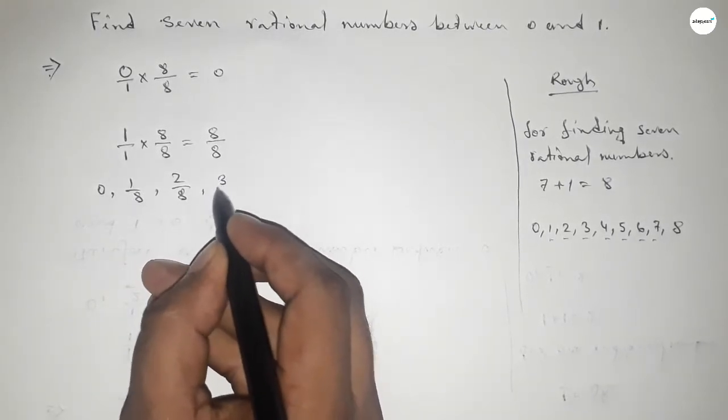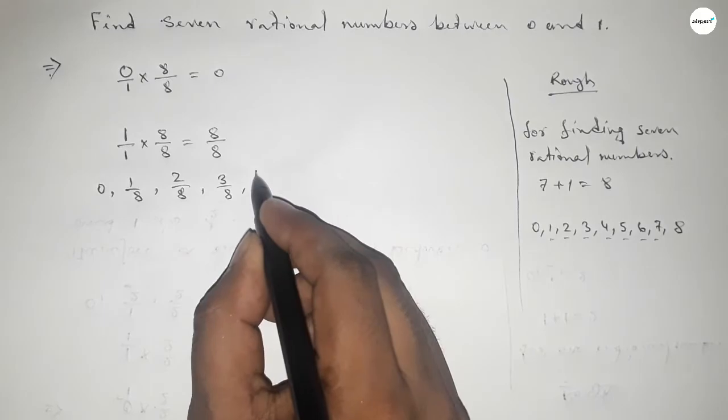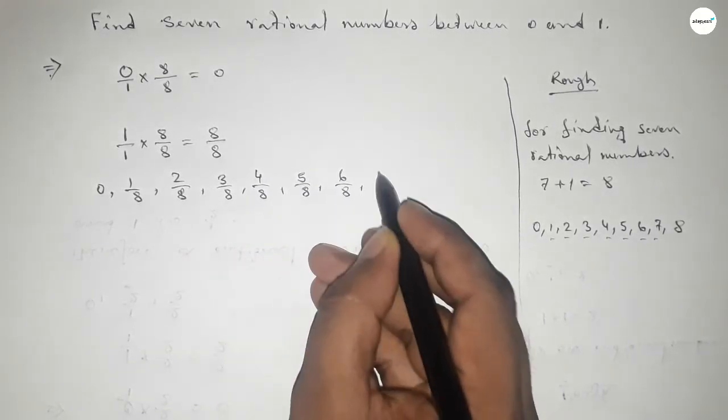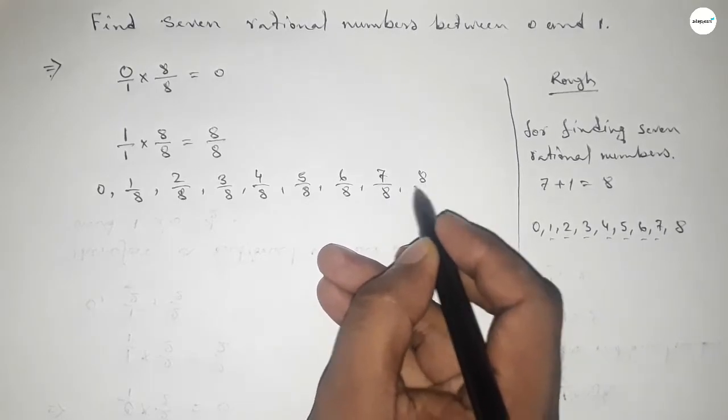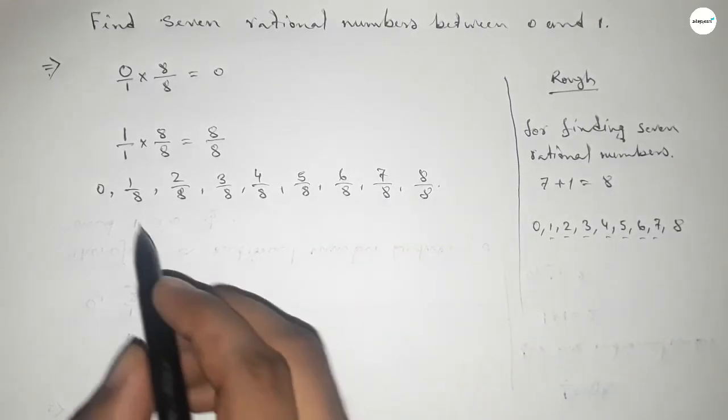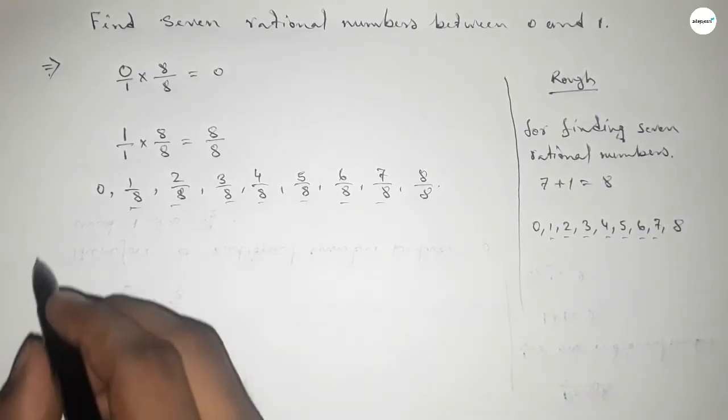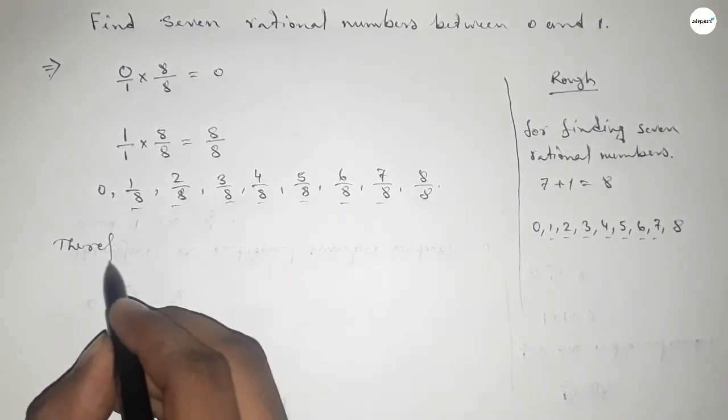And among these, these are the required seven rational numbers between 0 to 1.